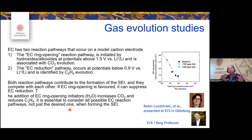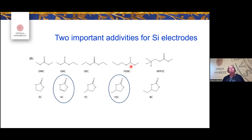If EC ring opening is favored it can suppress EC reduction. If you have too much water in your electrolyte, you get more CO2 and less ethylene. This is extremely important — and it explains some of my early attempts in the 1990s when my first batteries became balloons rather than real batteries. We learned the hard way to dry everything very carefully. It's nice to get an explanation 30 years later.